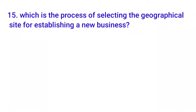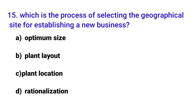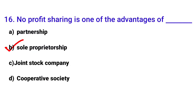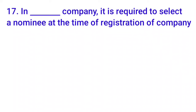Fifteenth MCQ: 'Which of the following is the process of selecting the geographical site for establishing a new business unit?' The answer is option C — plant location. Sixteenth MCQ: 'No profit sharing is one of the advantages of dash' — options are partnership, sole proprietorship, joint stock company, cooperative society. The answer is option B: sole proprietorship.